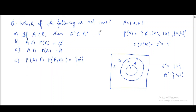We need to find which one is false, so since option (a) is true it is not our answer. For option (b), A and P(A) are two different types of sets — their elements don't overlap, so A intersection P(A) equals phi. This is also true.